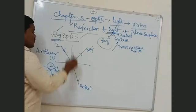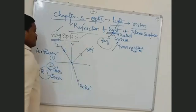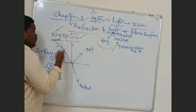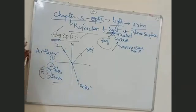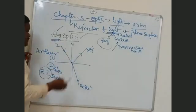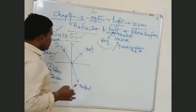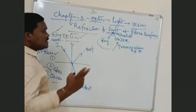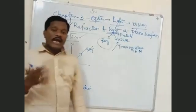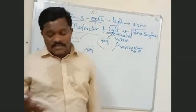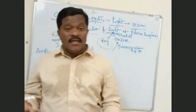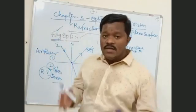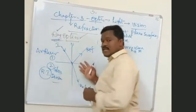At the boundary we have a normal. The angle at which you are going to make the light incident with respect to the normal is very important. There are basically two kinds of laws — two fundamental principles — that are very important here.